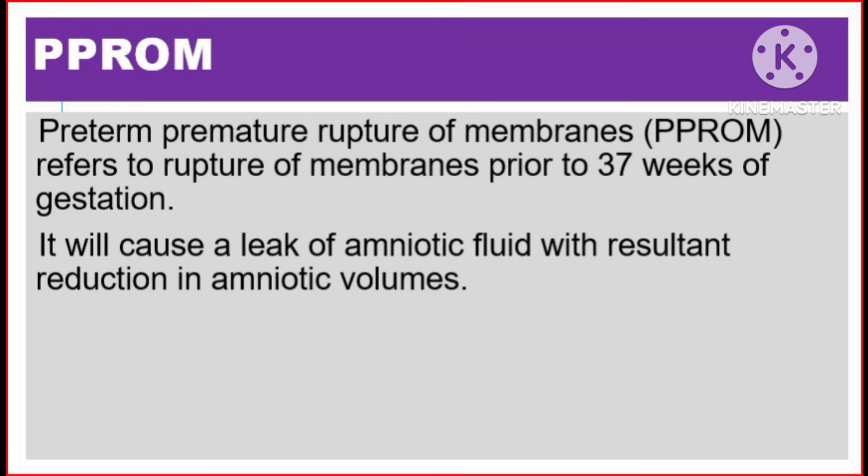Preterm premature rupture of membranes refers to rupture of membranes prior to 37 weeks of gestation. It will cause a leak of amniotic fluid with resultant reduction in amniotic volumes.